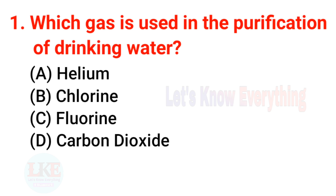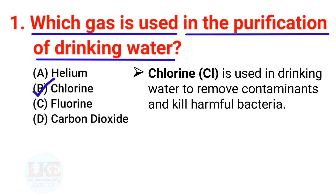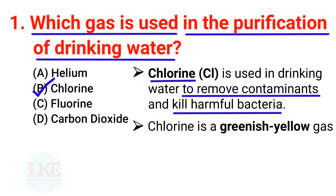First question: which gas is used in the purification of drinking water? Right answer, option B: Chlorine. Chlorine is used in drinking water to remove contaminants and kill harmful bacteria. Chlorine is a greenish-yellow gas.